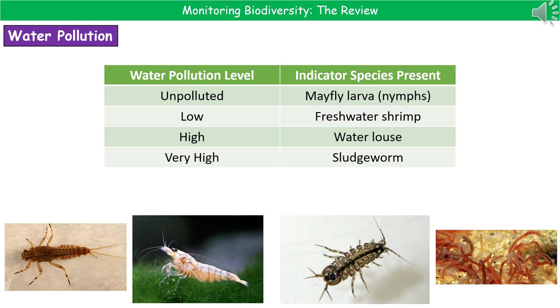Hopefully at the end of this video you can now describe what an indicator species actually is, and also how we can use the distribution of organisms to monitor both air and water pollution levels.